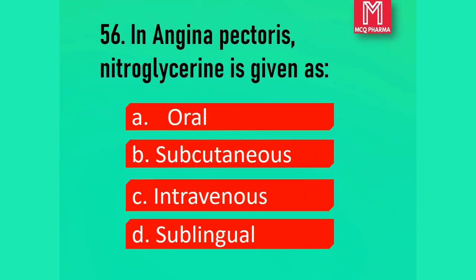Question number 56. In angina pectoris, nitroglycerin is given as: Option A, Oral. Option B, Subcutaneous. Option C, Intravenous. Option D, Sublingual. Correct answer: Option D, Sublingual.